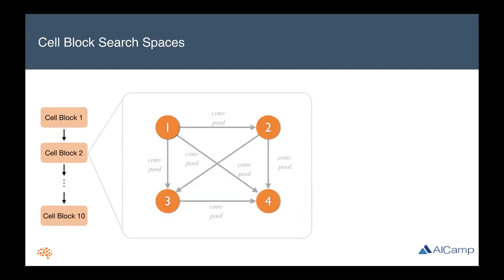Going back to NAS terminology, we have cell block search spaces. In a more detailed example, you have four different nodes corresponding to intermediate feature representations within your network, and edges between nodes indicating the flow of data and transformations applied to the features as we pass data from one node to the next. For example, on the edge from node one to two, there are two possible operations — a convolutional operation and a pooling operation — and the feature representation at node two will be one of those operations applied to the representation at node one.